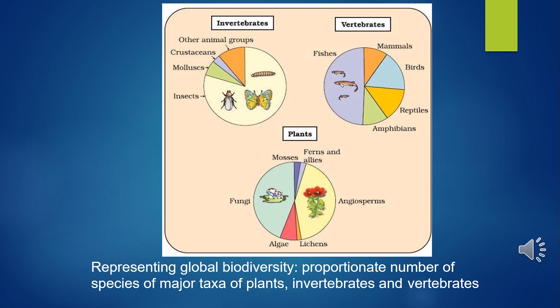Although India has only 2.4% of the world's land area, its share of global species diversity is impressive at 8.1%, making it one of the 12 mega diversity countries. Nearly 45,000 species of plants and twice as many animal species have been recorded from India. Applying May's global estimate, only 22% of total species have been recorded, meaning there are probably more than 1 lakh plant species and more than 3 lakh animal species yet to be discovered and described in India.